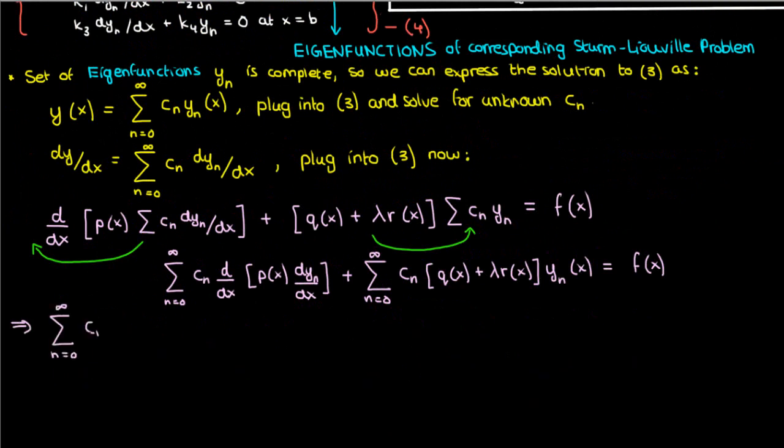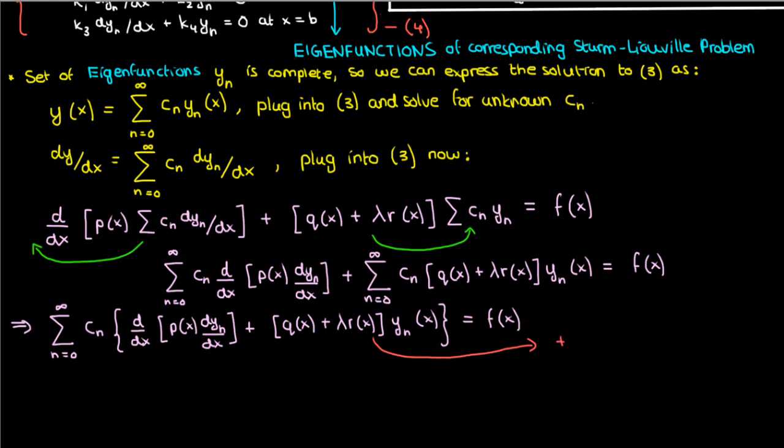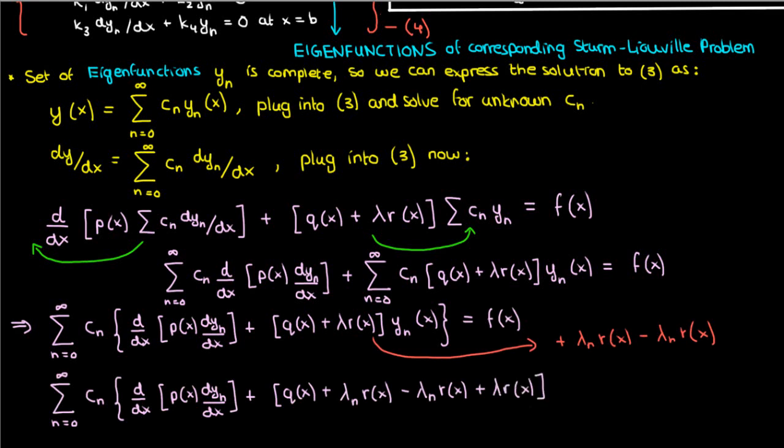Once we do that, we can then combine terms to get the following expression. Now, inside these square brackets, we can add lambda sub n times r of x and subtract lambda sub n times r of x.